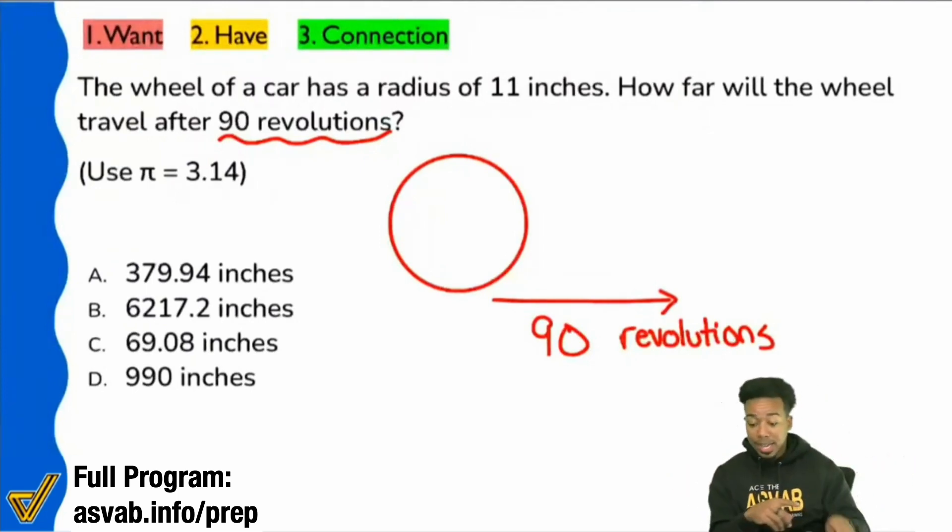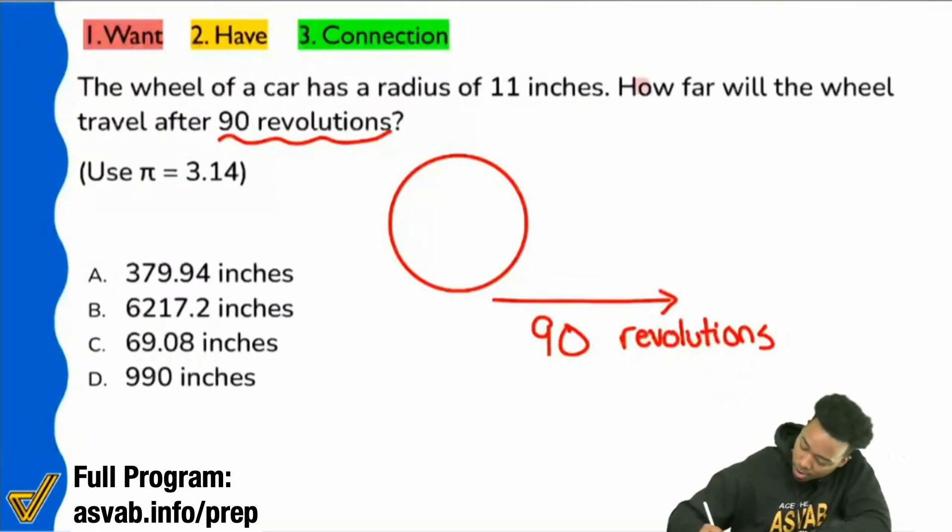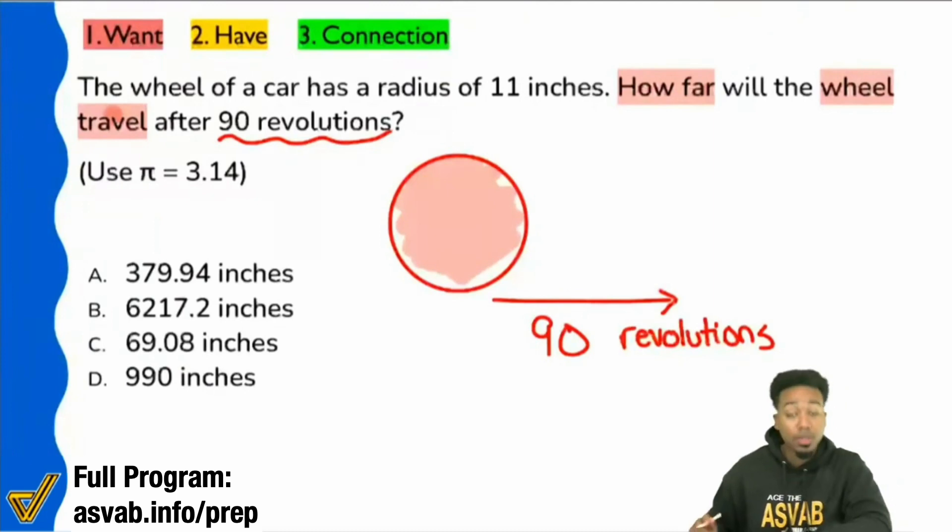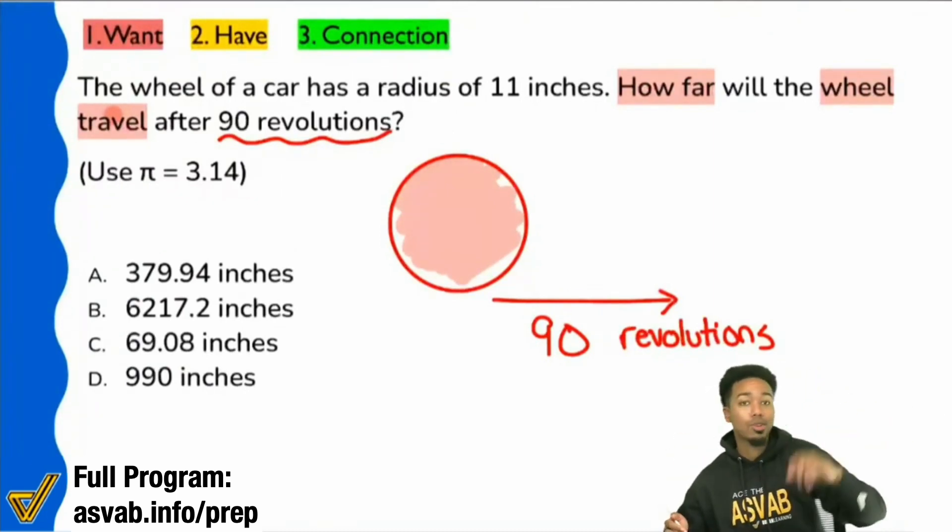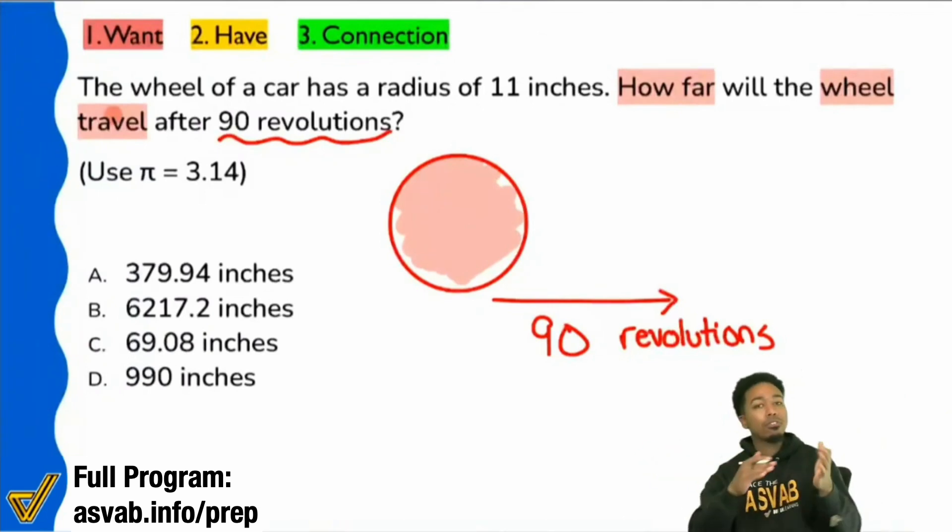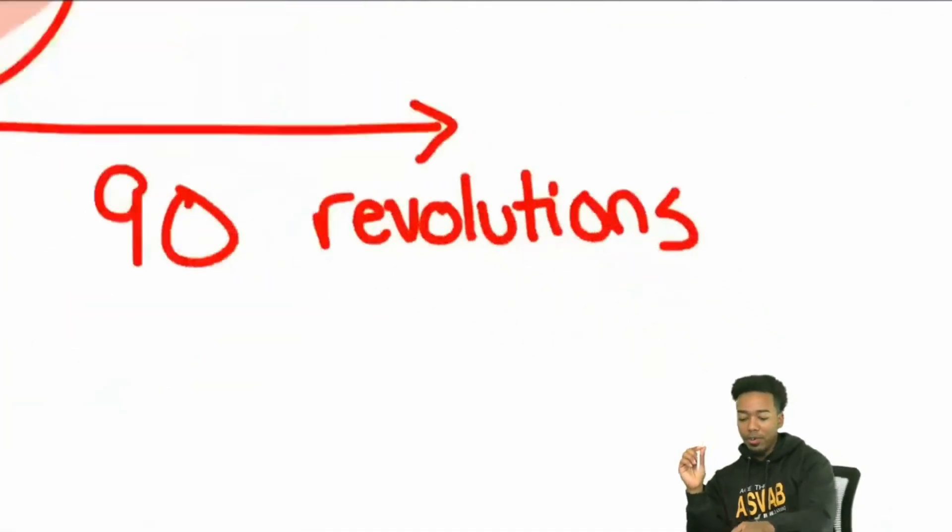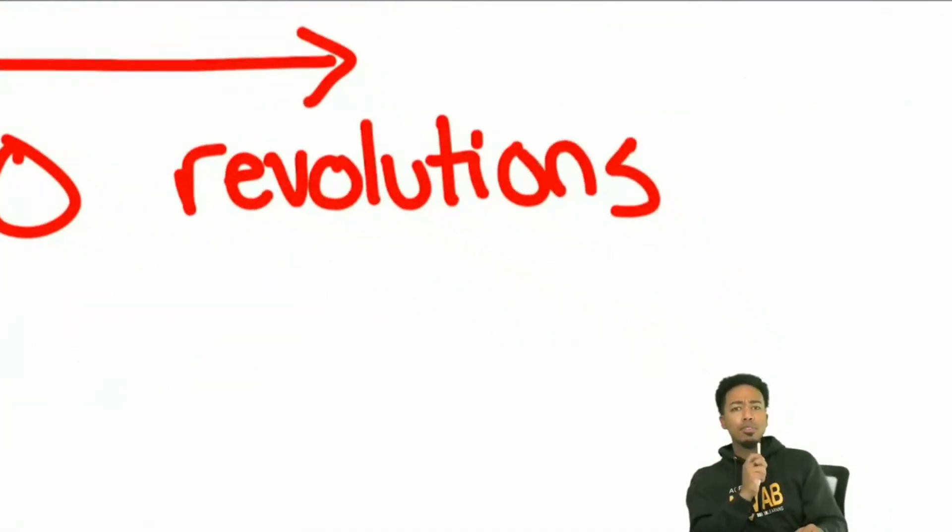First step we need to take is, what's the question? And it says, how far? How far? That's distance. How far will the wheel travel? So if this is my wheel right here, then we're trying to figure out how far that wheel goes after 90 of those revolutions. But it's clear we're trying to see how far the wheel goes. So with that said, let's talk about that word right over here.